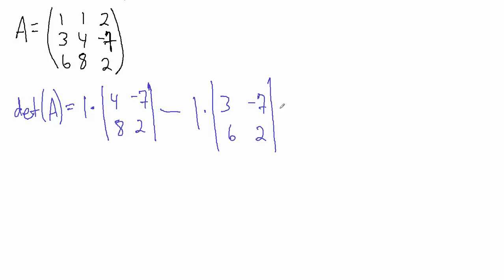And then lastly, what we do is say plus 2 times — you may have noticed a pattern here — this 2 is in the first row and third column, so we ignore the first row, ignore the third column. What's left? 3, 4, 6, and 8. So we're going to multiply by the determinant of that matrix formed by 3, 4, 6, and 8.